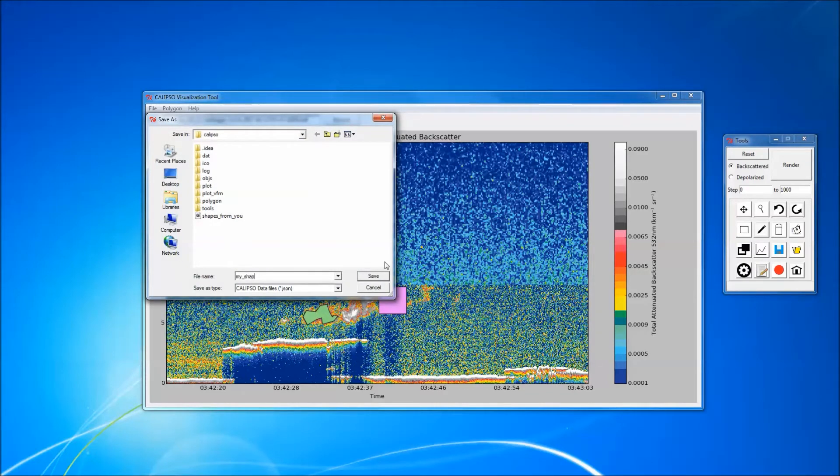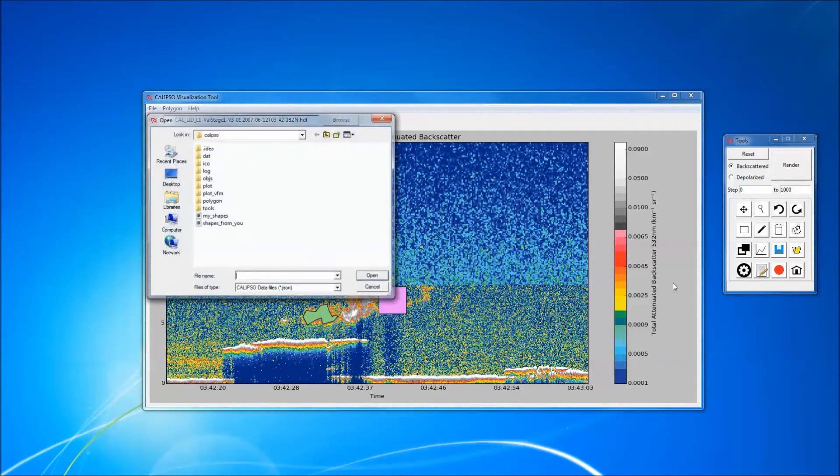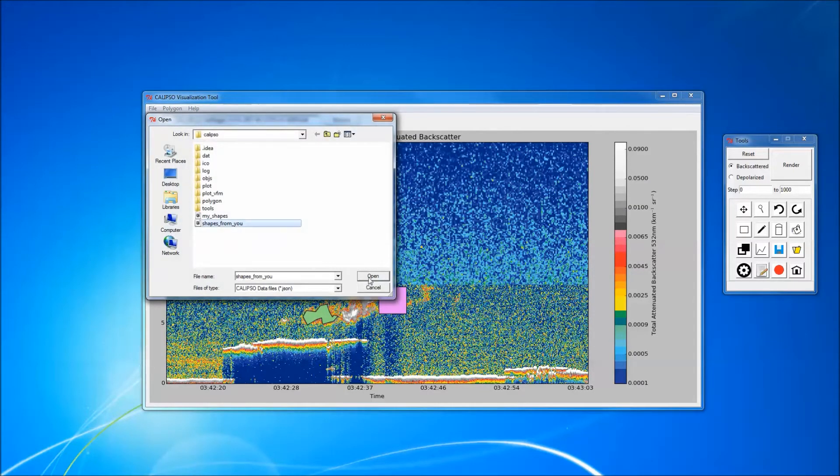Once labeled, researchers can choose to share these objects personally by exporting the data in the form of a JSON file, which can be reloaded into a plot by other users to view your shapes.